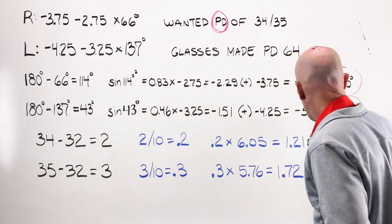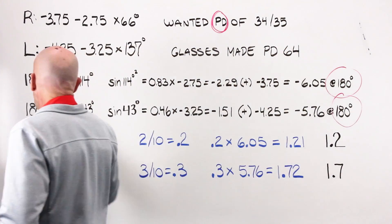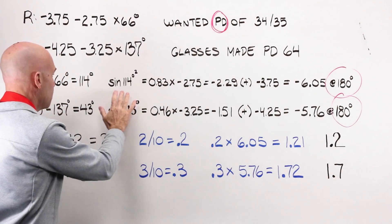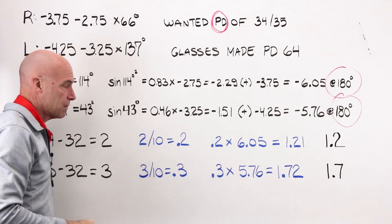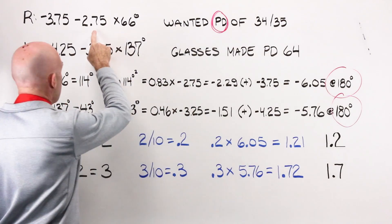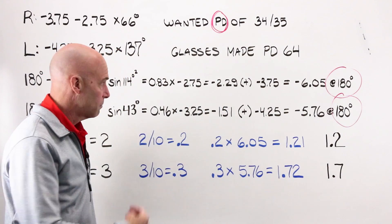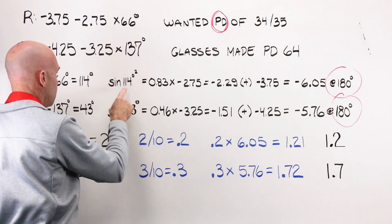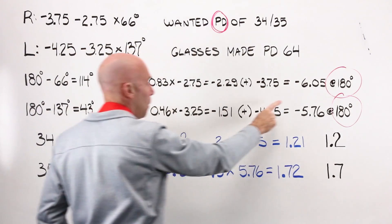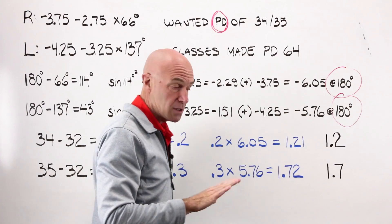I've written it out, and if you follow it along in a calculator it would come up like this. I have 180, I need 66 — that's a difference of 114 degrees. The sine of 114 degrees squared is 0.83, and in your calculator that will run out to far more digits. I multiply that times my cylinder value, and that gives me minus 2.29 — that's how much of my cylinder is in play at 114 degrees. I take that amount and I add it to my sphere value for a total power of minus 6.05 at 180 degrees. That's the first thing I need.